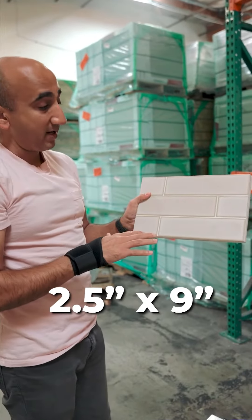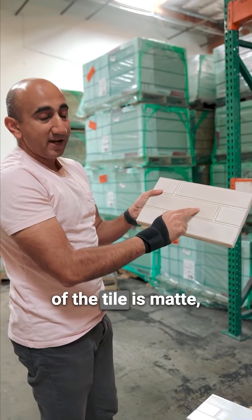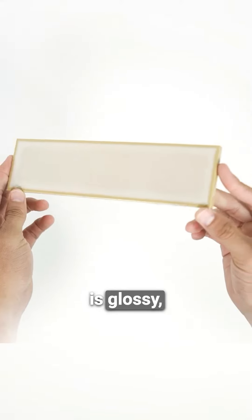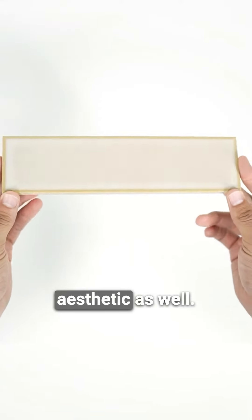All of these tiles are two and a half by nine. I would say the body of the tile is matte but the border is glossy, so it gives it a very deep aesthetic as well.